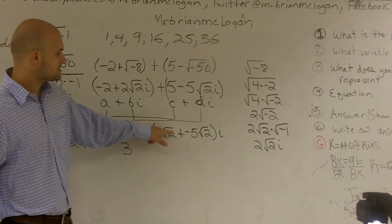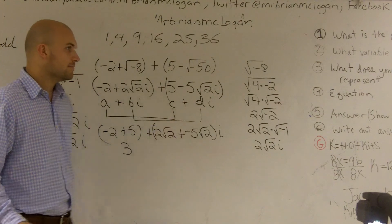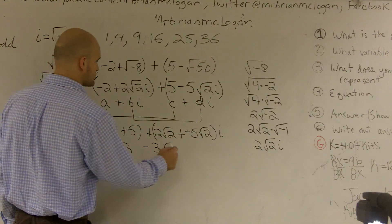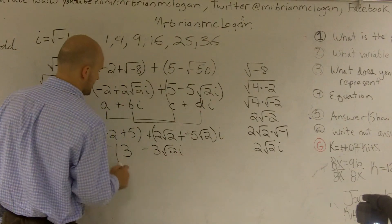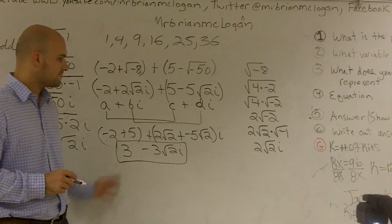Since these are the same radicals, I can combine them. 2 square root of 2 minus negative 3 is going to give you negative 3 square root of 2i. So that would be my final answer. It is in standard form.